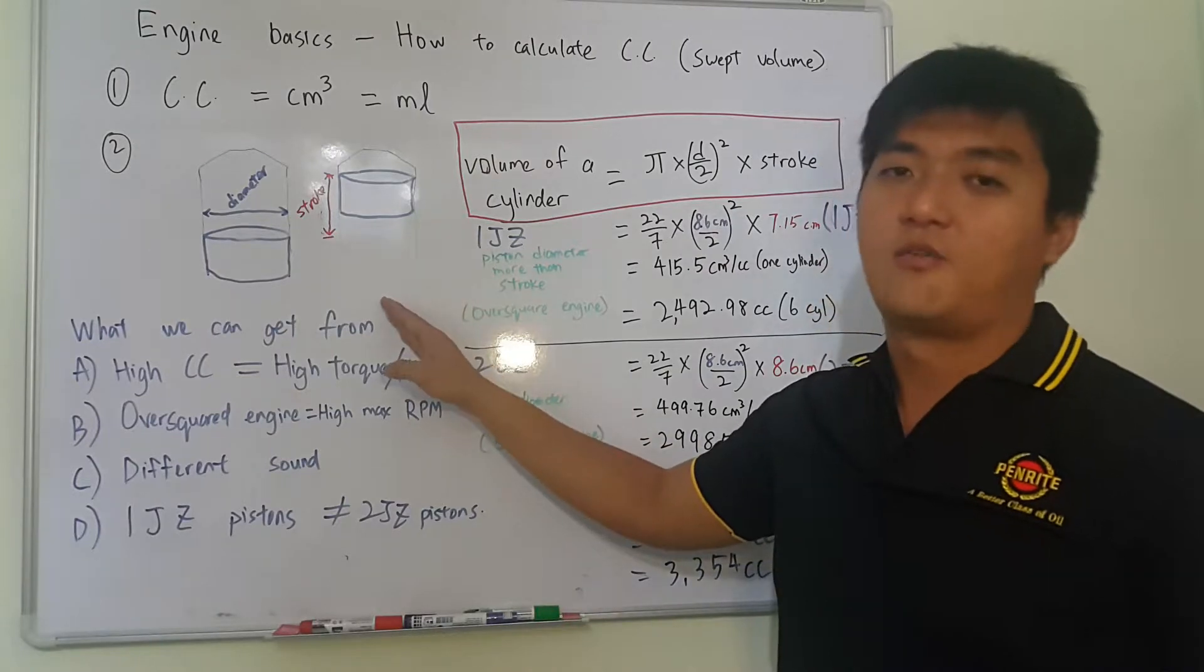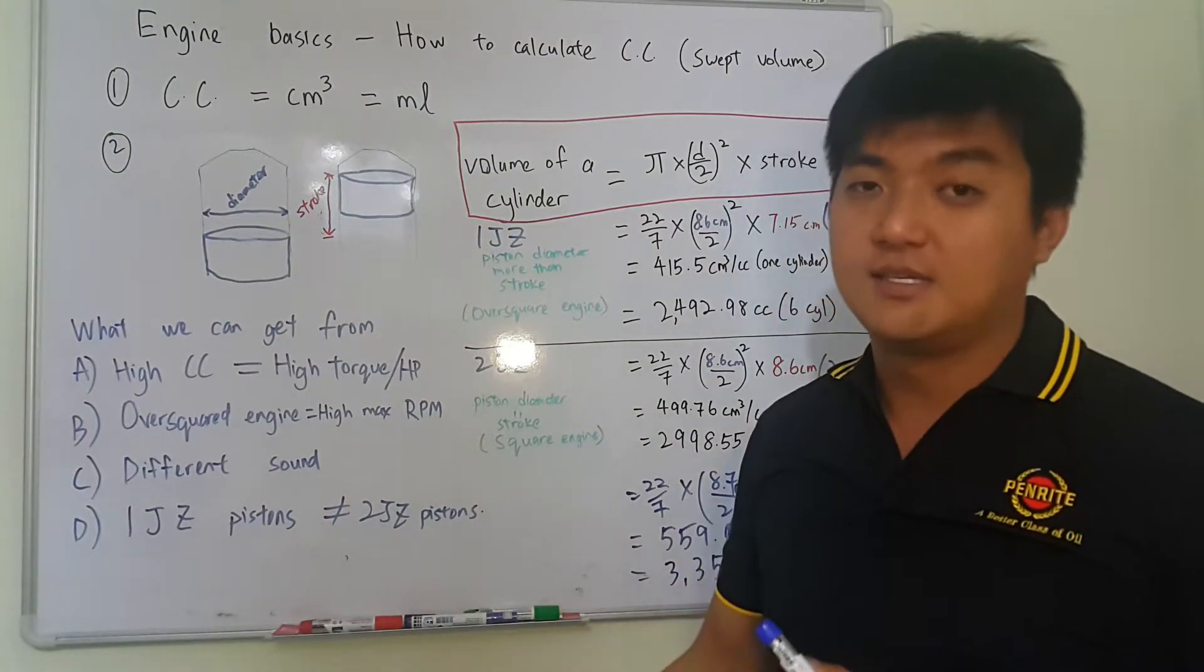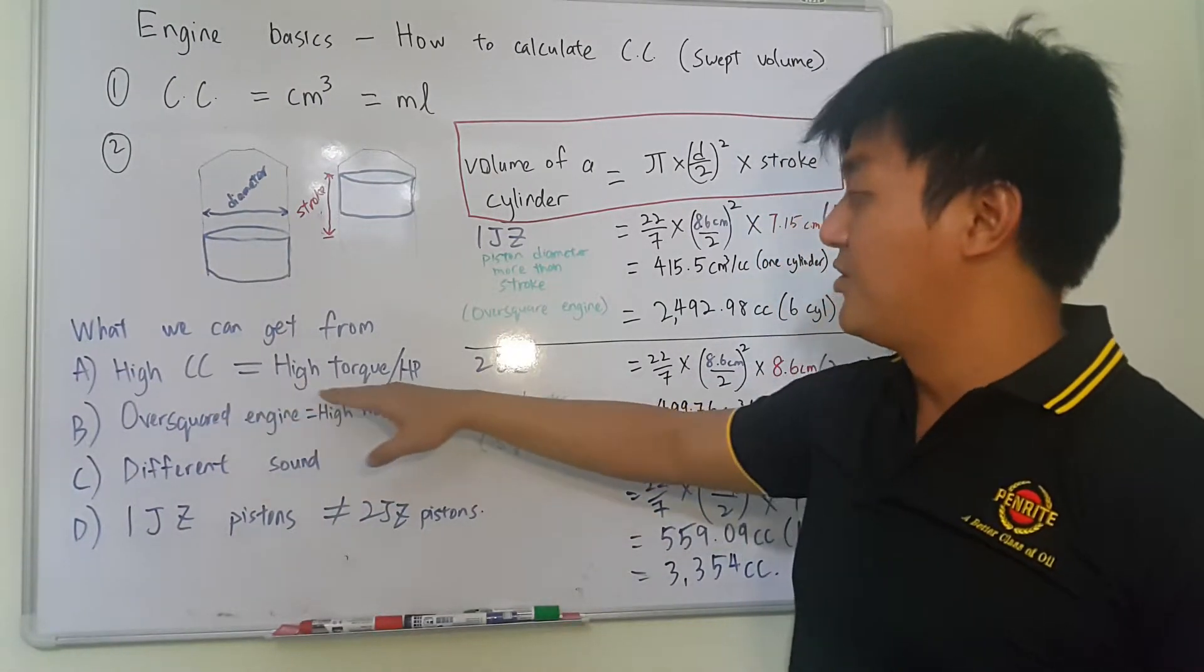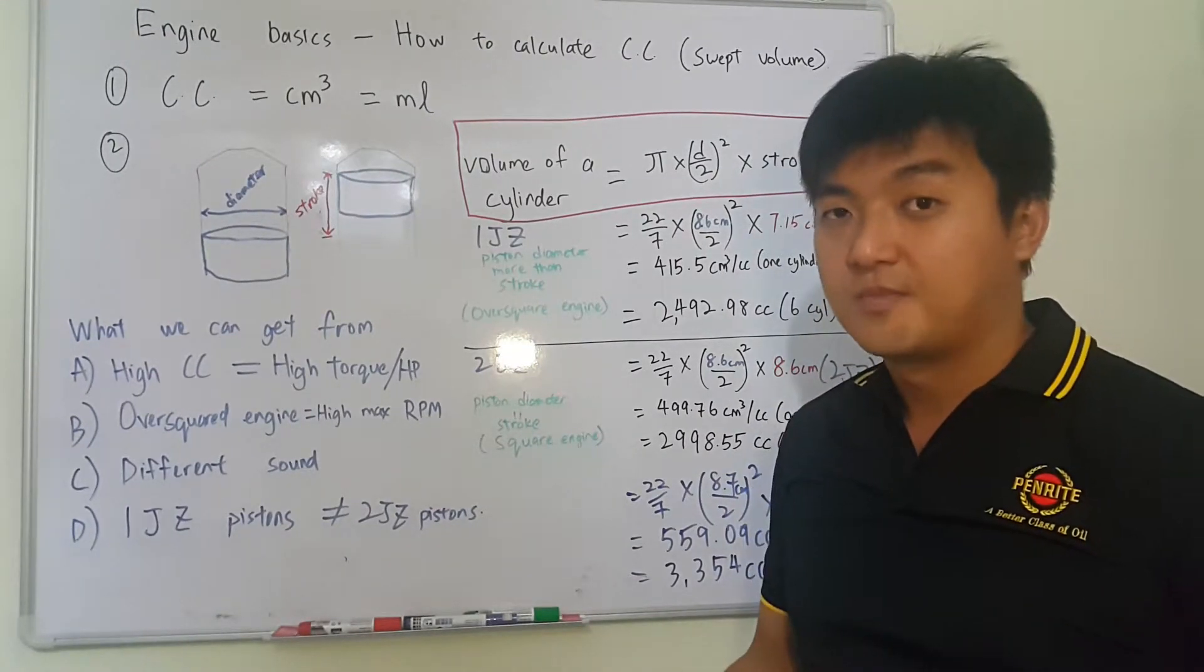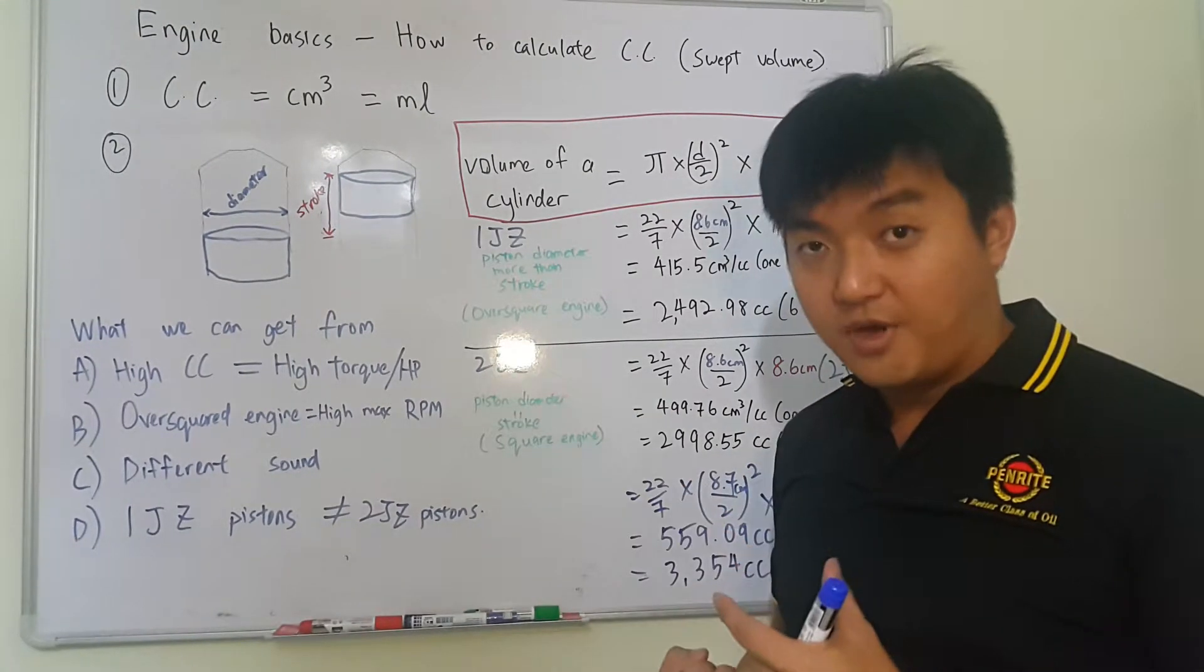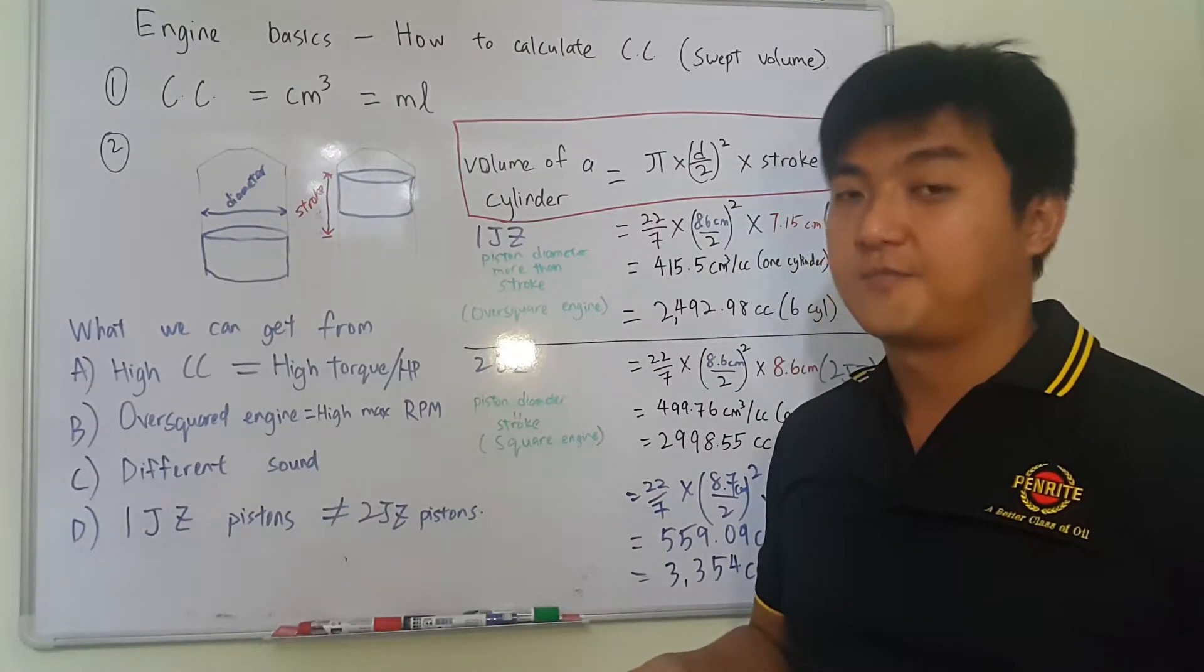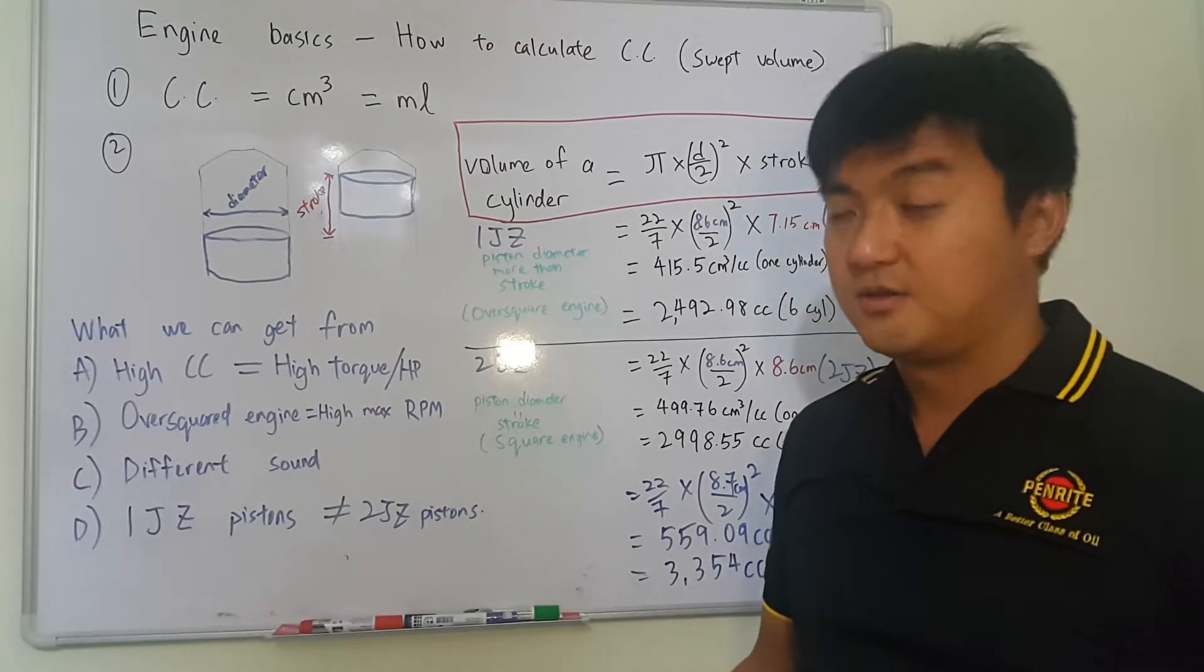Alright, so what can we get from high CC? Why we go after high CC? Okay, because high CC, high displacement, you can get higher amount of torque, higher horsepower, because it can get in more air, compress more air, and you can spray more fuel inside. That means you can get more horsepower and torque.